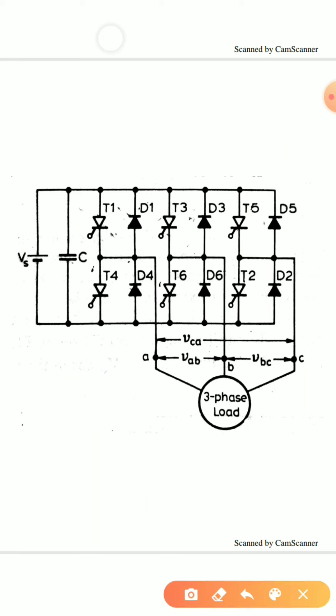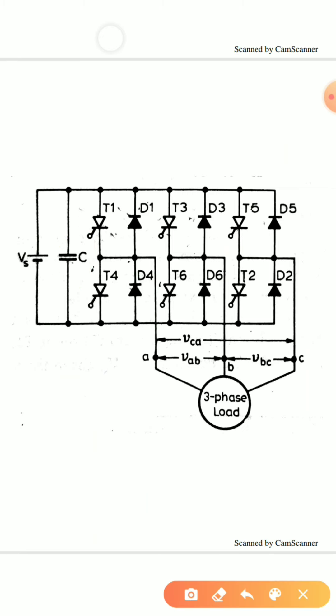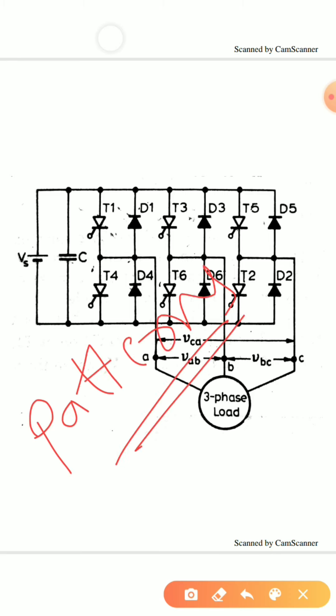In the circuit, a capacitor is connected on the input side. This capacitor is connected at the input terminal to make the DC voltage constant and to remove whatever harmonics are present — a DC filter is connected at the input. Now speaking about how this will operate, there are basically two patterns that we can use for the operation of a three-phase bridge inverter.